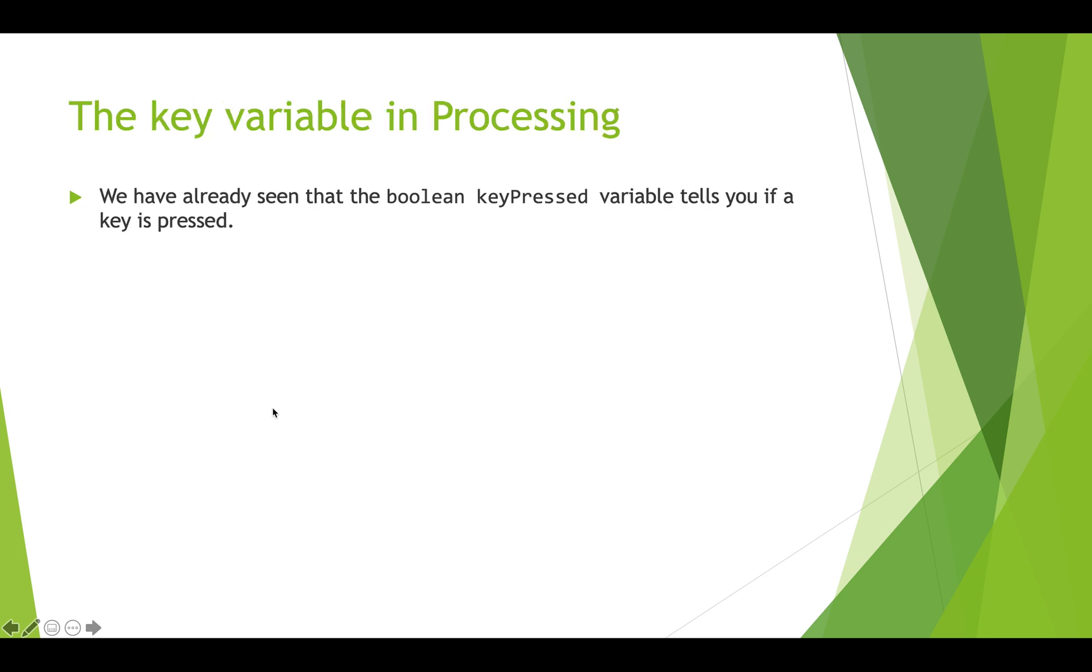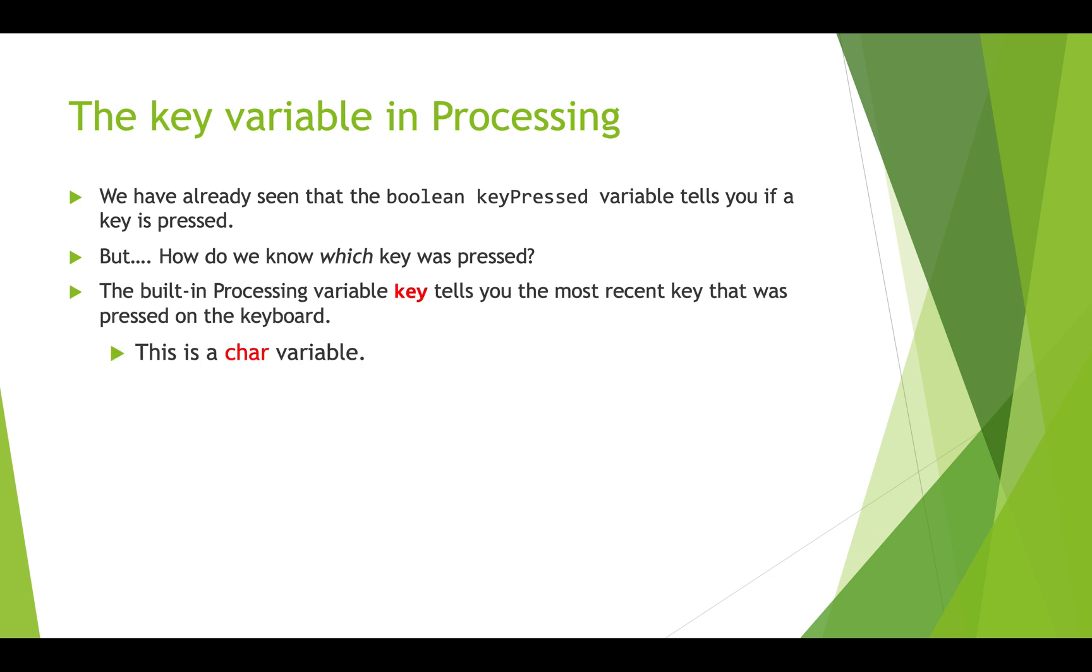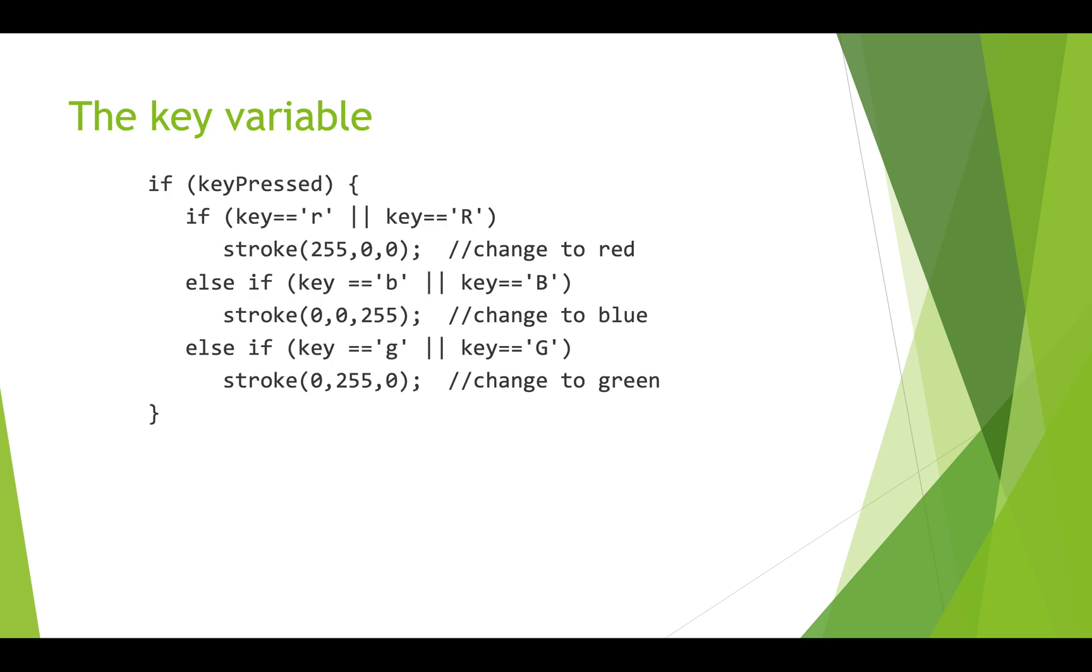How do you work with this stuff in processing in terms of user input? You've already probably seen that the boolean variable keyPressed allows you to tell if somebody's pressing a key on the keyboard. The question then is how do you know which key was pressed and can we use that information? Well of course we can. The built-in processing variable key tells us which key on the keyboard was most recently pressed and it is a char variable.